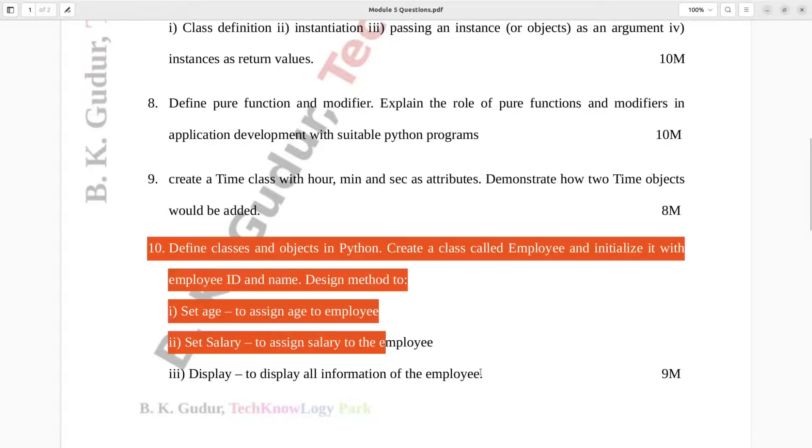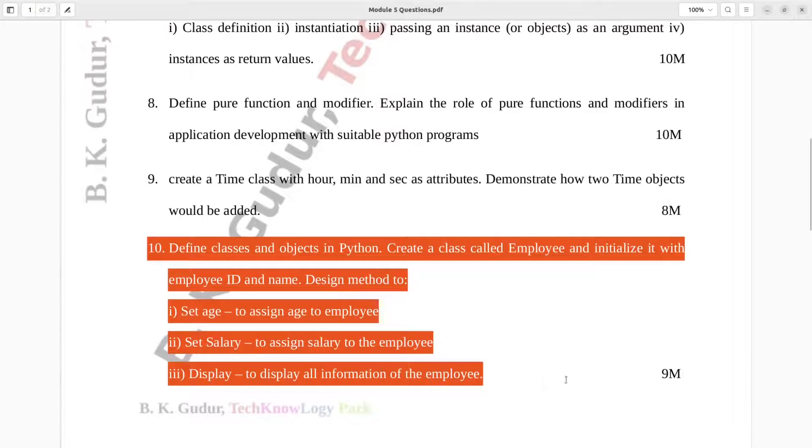Question number ten. Define classes and objects in Python. Create a class called employee and initialize it with employee ID and name. Design method to set age to assign age to employee, set salary to assign salary to the employee, display to display all information of the employee. Nine marks.